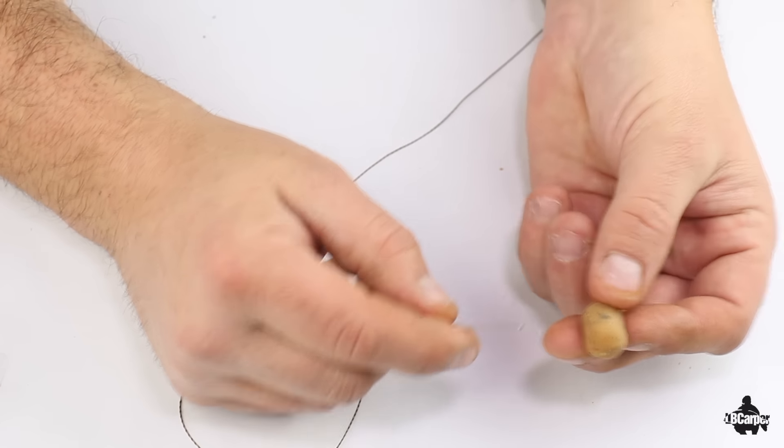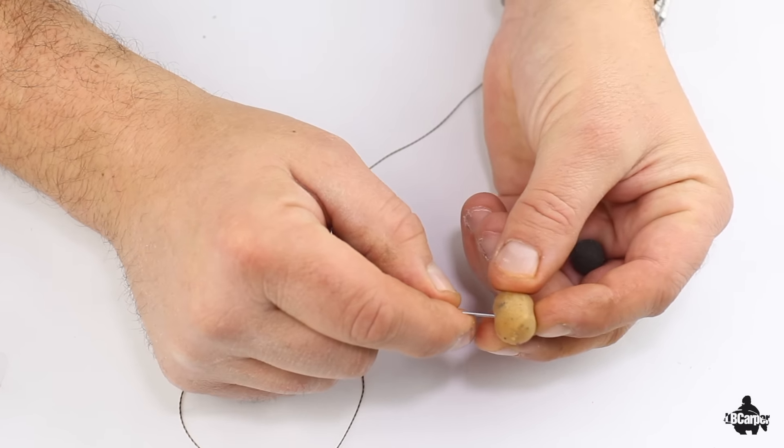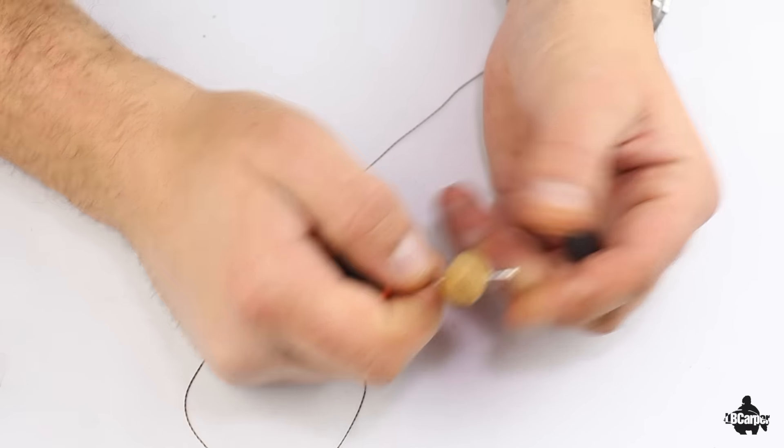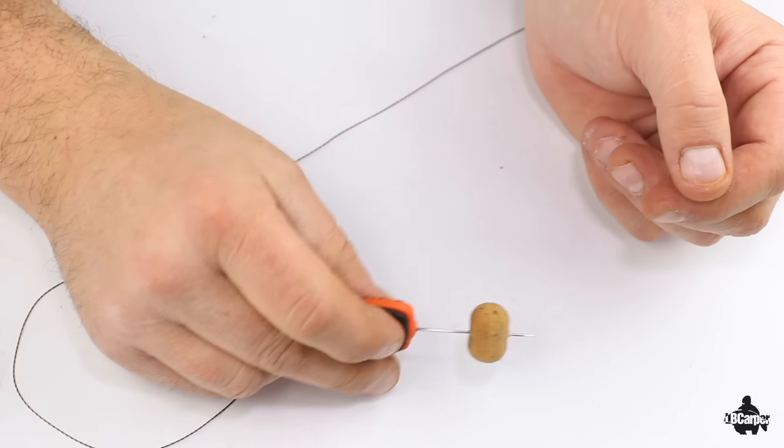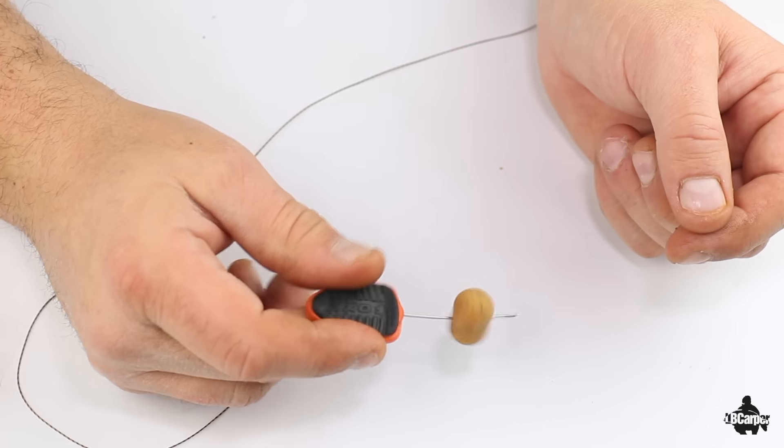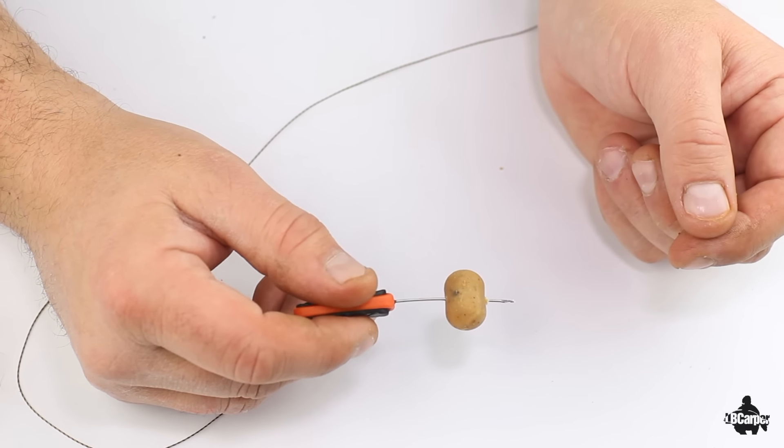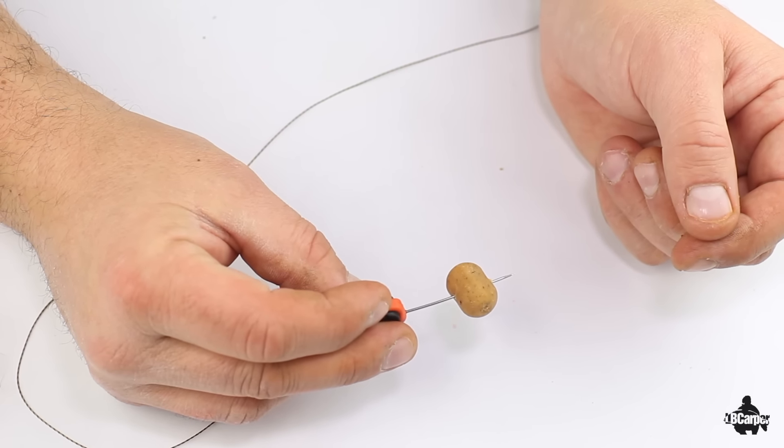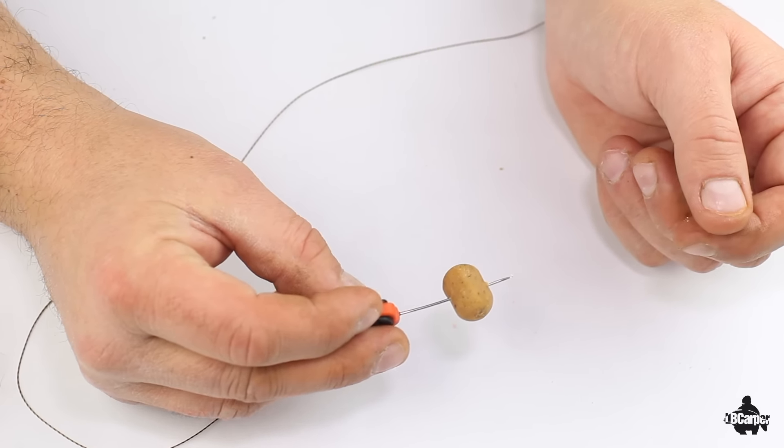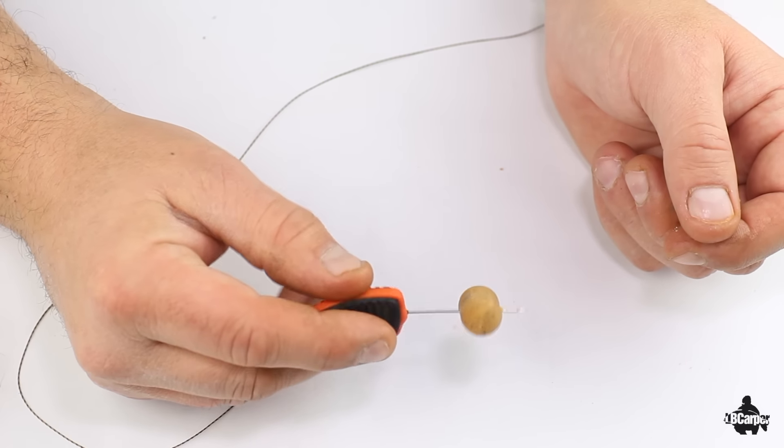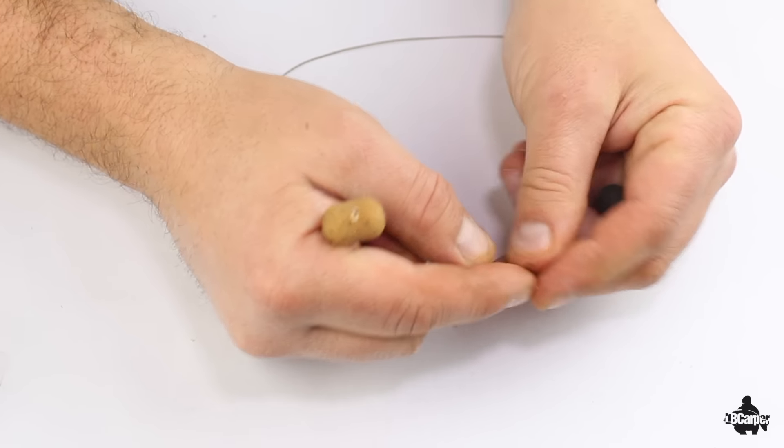Stick the dumbbell on, stick it on through the middle like so. With these hook baits they're a little bit different to your normal round baits that fish come across day in day out. It just trips them up a little bit and I think it's safe.